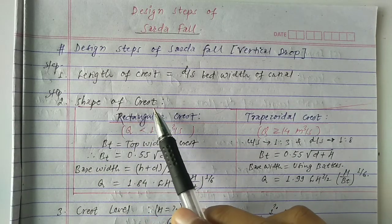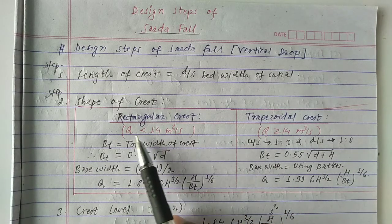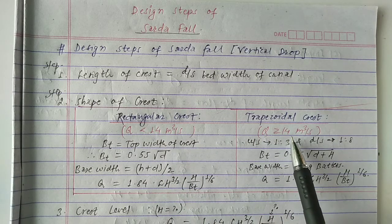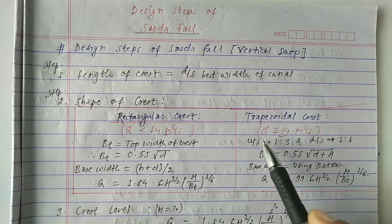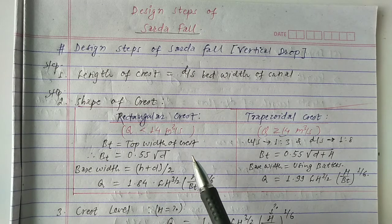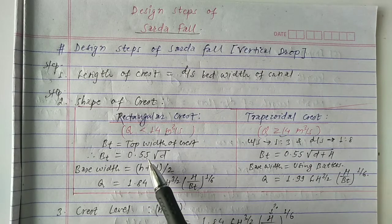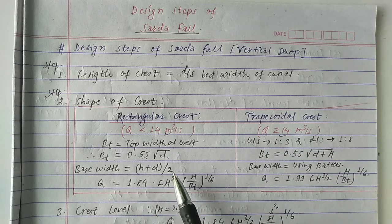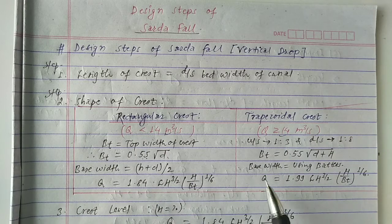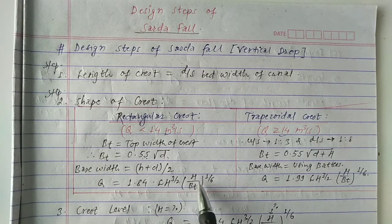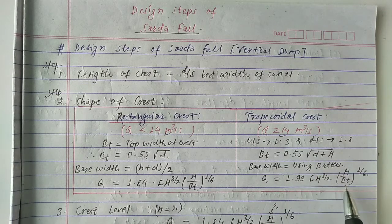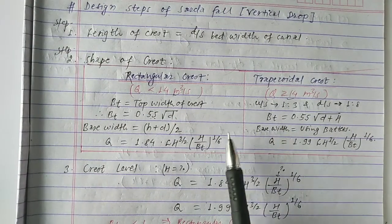In Step 2, we have to determine the shape of crest. The criteria are: whenever the discharge is less than 14 cubic meters per second, we provide a rectangular crest; whenever the discharge is greater than or equal to 14, we provide a trapezoidal crest. For a rectangular crest, top width Bt = 0.55√(2d), and discharge Q = 1.84 × L × H^(3/2) × (H/Bt)^(1/6). For a trapezoidal crest, Bt = 0.55√(2d) + H, base width = (H + d)/2, and the constant changes from 1.84 to 1.89.